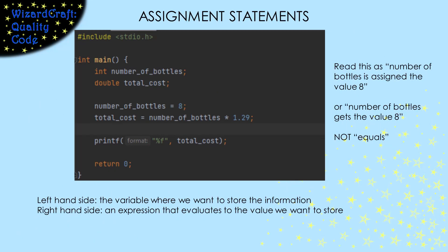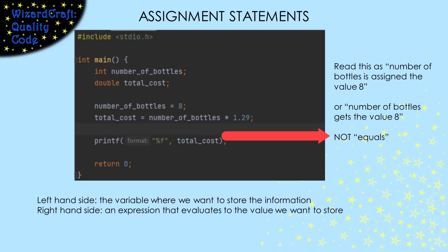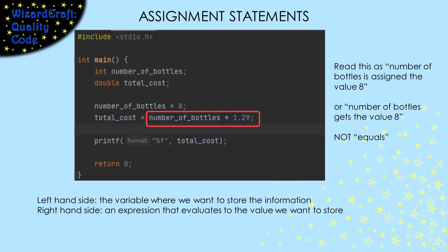We store information into a variable using an assignment statement. We read this first one as: number_of_bottles gets the value eight. Assignment statements always have the variable on the left-hand side and the value we want to put into it on the right-hand side. We read the equal sign as 'gets the value' because we want to express the idea that the statement encodes an action — storing the information — not a comparison. The second assignment statement evaluates number_of_bottles asterisk 1.29; that asterisk is the multiplication operator, so it multiplies the eight in number_of_bottles by 1.29, resulting in 10.32. That's the value stored into total_cost.